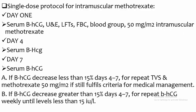Single dose protocol for intramuscular methotrexate: Day 1 — serum beta-hCG, urea and creatinine, liver function tests, full blood count, blood group. Day 4 — serum beta-hCG. Day 7 — serum beta-hCG. If beta-hCG decreases less than 15% between Day 4 and Day 7, repeat transvaginal ultrasound and administer a second dose of methotrexate 50 mg per meter squared if the patient still fulfills criteria for medical management. If beta-hCG decreases greater than 15%, repeat beta-hCG weekly until level is less than 15 international units.